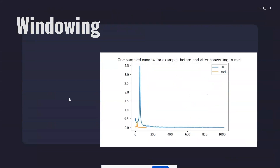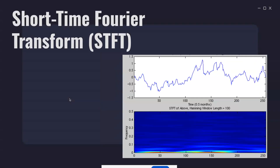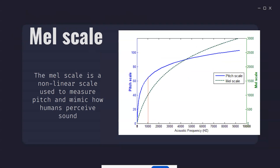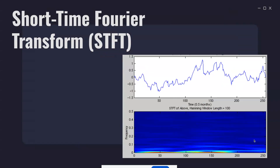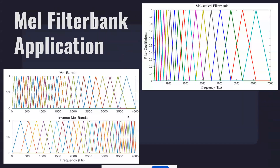First is windowing — you basically take out small segments out of the audio, and all these segments are called windows. Each window is analyzed separately to calculate the short-time Fourier transform. For each window we apply the fast Fourier transform, which converts your time-domain signal into a frequency-domain signal. So the amplitude at a particular time gets converted into frequency signals, showing what the frequency was at a particular time.